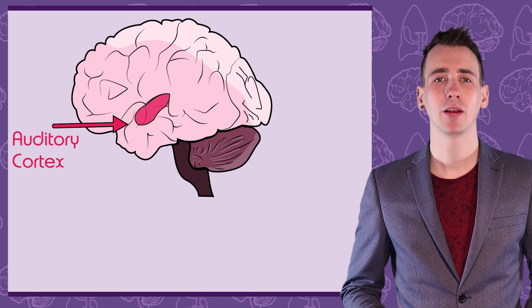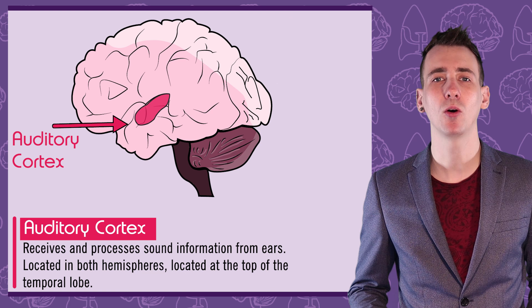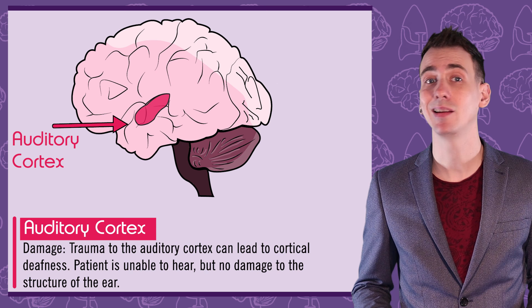The auditory cortex is located at the top of the temporal lobe on both sides of the brain and receives auditory — or sound — sensations from the ears. Damage to the auditory cortex can lead to deafness.